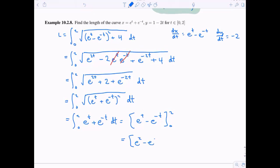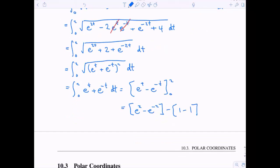So when I plug in 2, I'll get e squared minus e to the negative 2. And when I plug in 0, I'm going to get 1 minus 1. So therefore, our answer will just be e squared minus e to the negative 2. Technically, there's a minus 0 here, but of course we know that doesn't affect our answer.